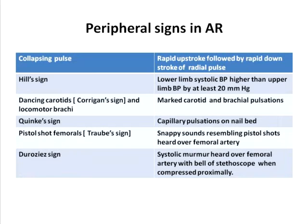Palpable sounds are not felt, and you can occasionally feel a diastolic thrill in the aortic area. The peripheral signs dominate the clinical features of severe aortic regurgitation. These include the collapsing pulse — a rapid upstroke followed by rapid downstroke of the radial pulse — and the Hill sign, which is an apparent increase in lower limb systolic BP of at least 20 mmHg more than the upper limb BP. Marked pulsations of the carotid and brachial vessels are called dancing carotids or Corrigan sign and locomotor brachii. Capillary pulsation on the nail bed is called the Quincke's sign, and a pistol shot sound heard over the femoral artery is called pistol shot femorals or Traube's sign.